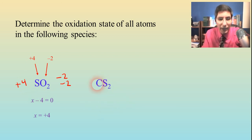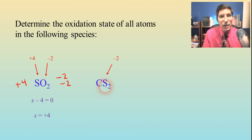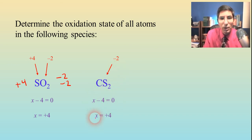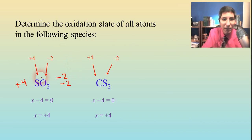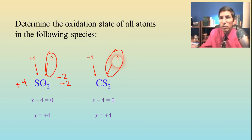Let's try carbon disulfide. Carbon is the one we don't know, so we'll call that X. Sulfur is minus two because it's the most electronegative — it's farther to the right on the periodic table. So we plug in: X minus four equals zero, so carbon is going to be positive four. Notice how these two examples are different: in sulfur dioxide, oxygen was the most electronegative and we knew it first; in carbon disulfide, sulfur is the most electronegative atom. Use the most electronegative atom as the one you are sure of, then solve for any others.